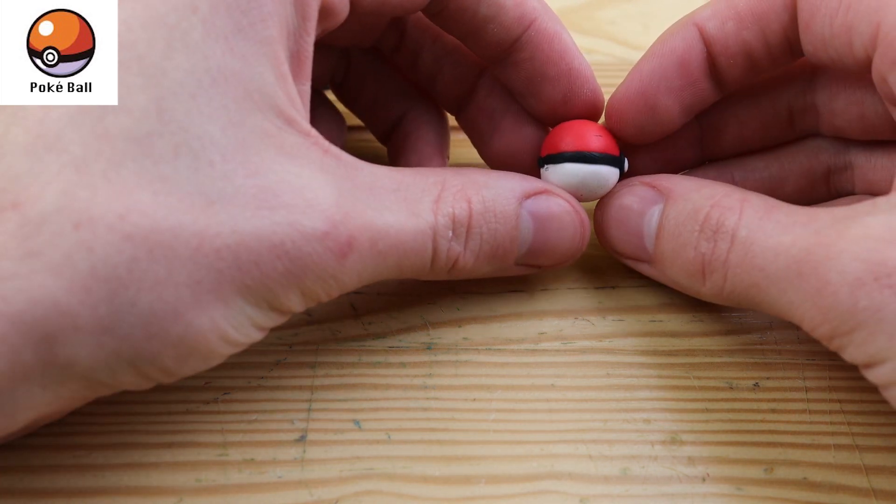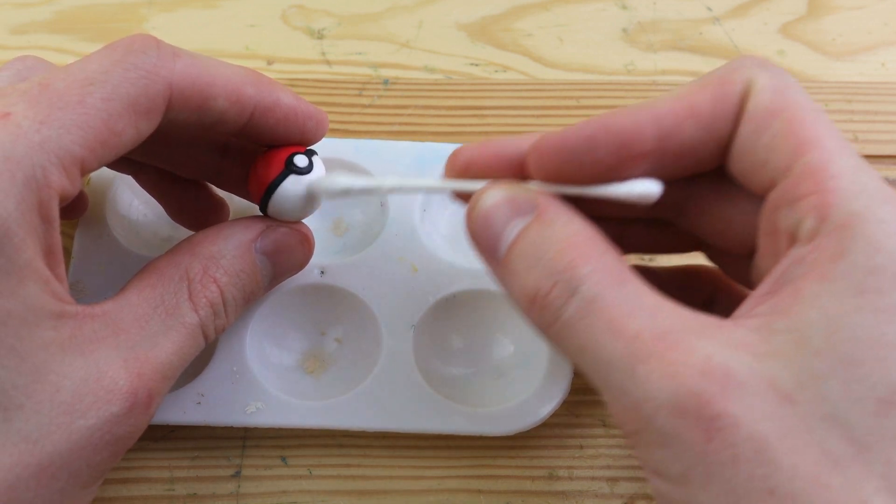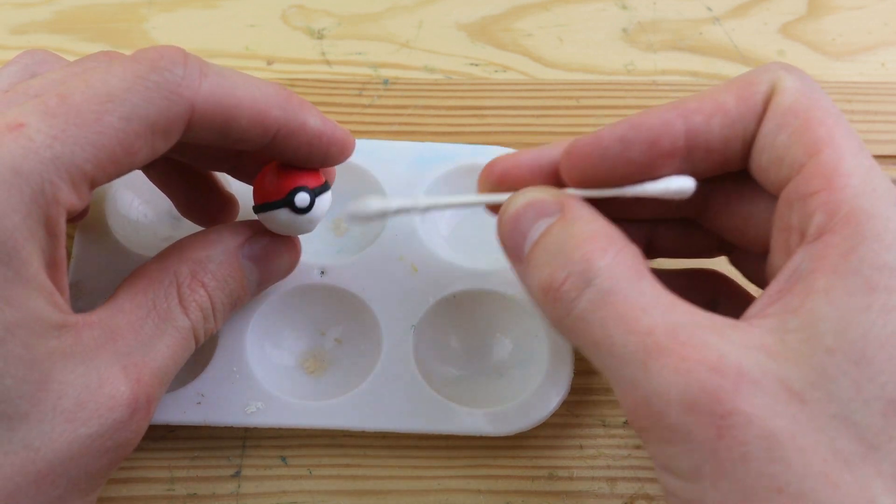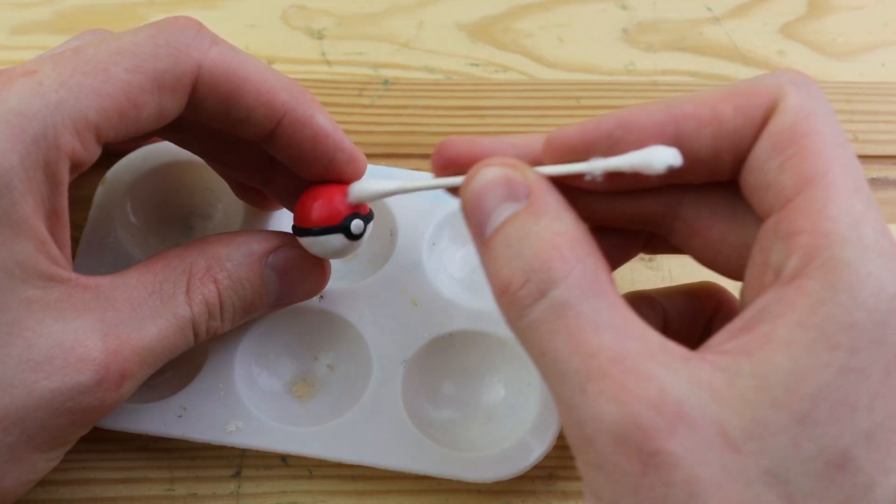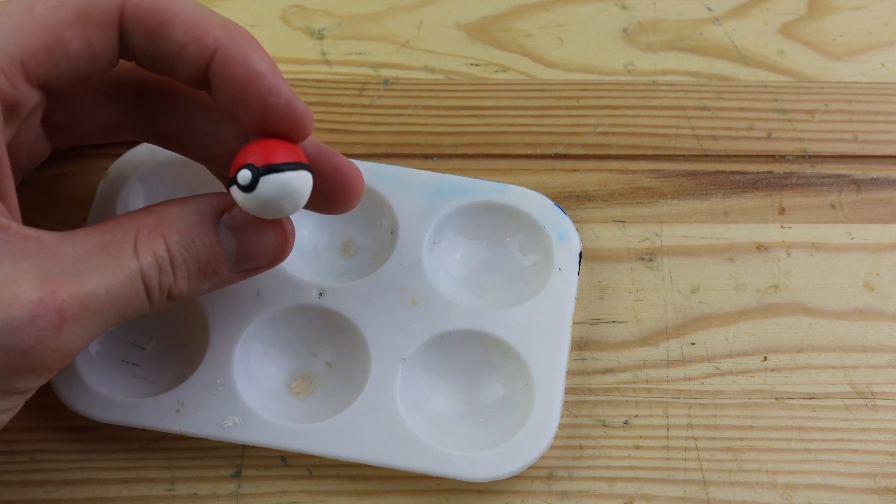And now our Pokéball is complete. But as you can see, it's very dirty. And this is an issue I always have with white clay, or any type of lighter color. By using some rubbing alcohol or isopropyl alcohol, we can clean off all of this filth, and it looks good as new.